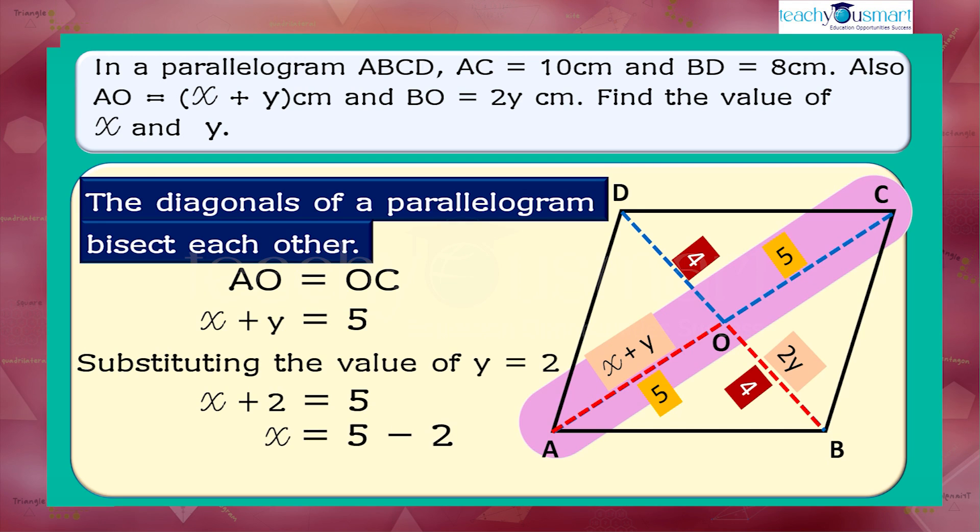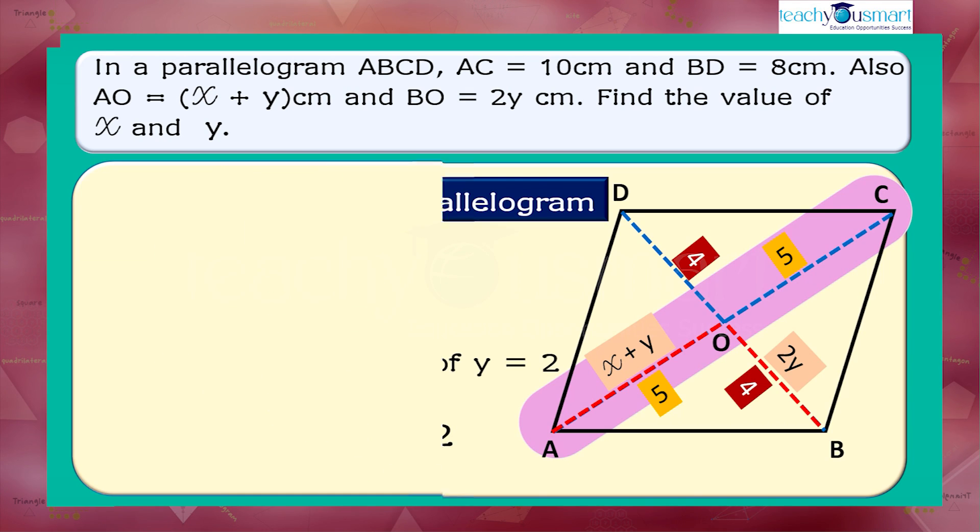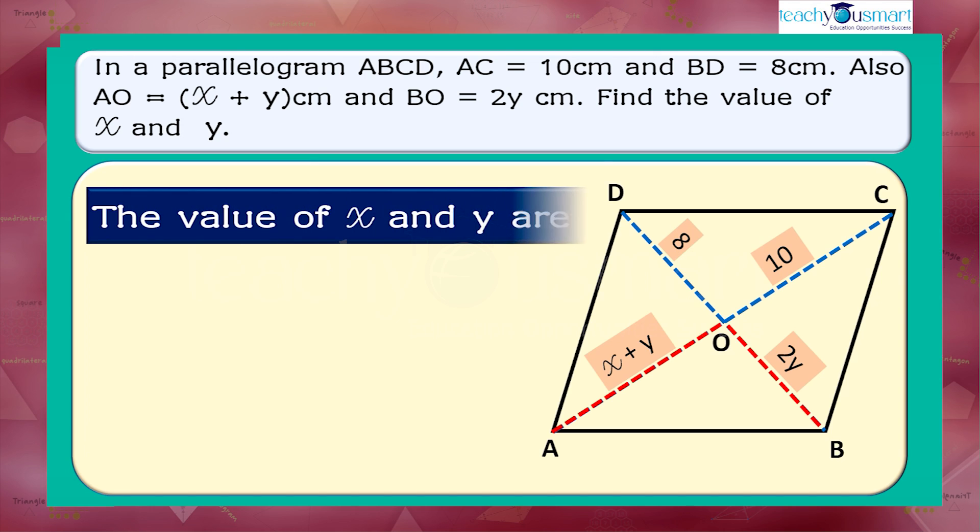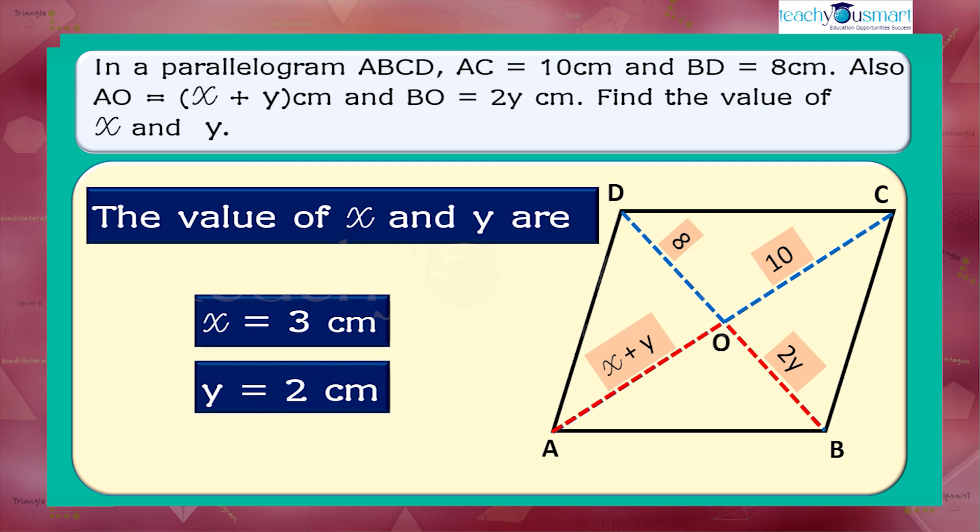x equals 5 minus 2. That is, x equals 3 cm. Therefore, the value of x and y are x equals 3 cm and y equals 2 cm.